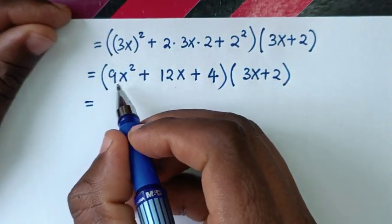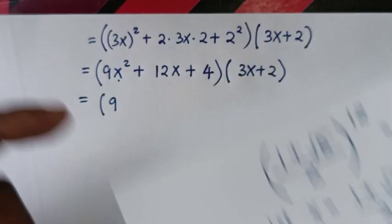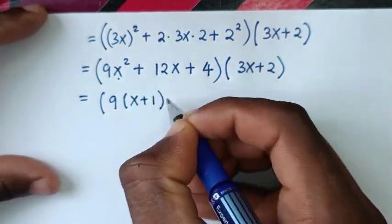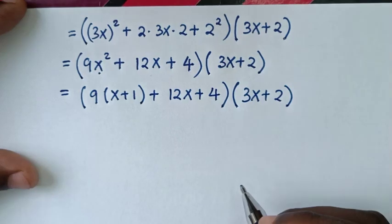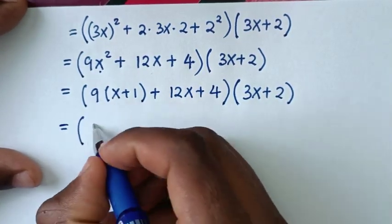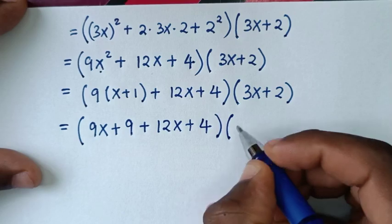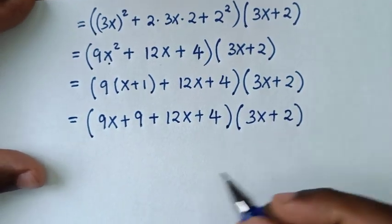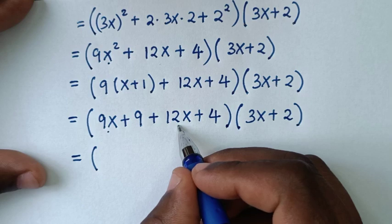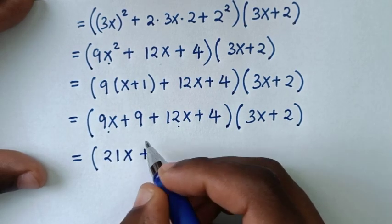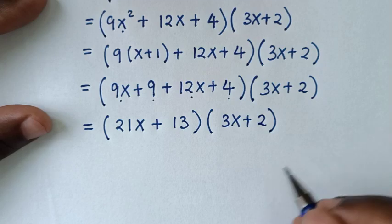Then we substitute x squared equals x plus 1 again, so 9x squared becomes 9(x plus 1). It will be bracket (9(x plus 1) plus 12x plus 4) bracket times (3x plus 2). This gives (9x plus 9 plus 12x plus 4) times (3x plus 2), and collecting terms: (21x plus 13) times (3x plus 2).